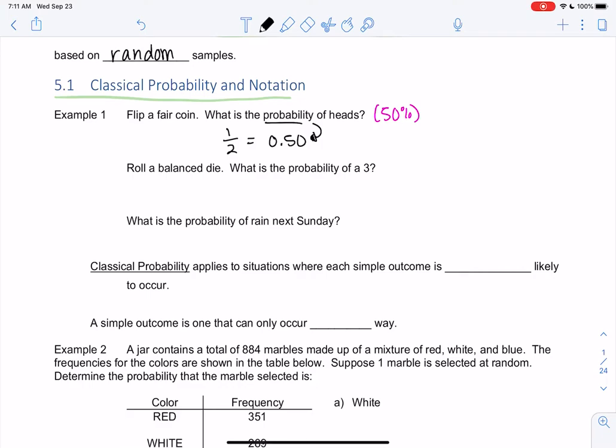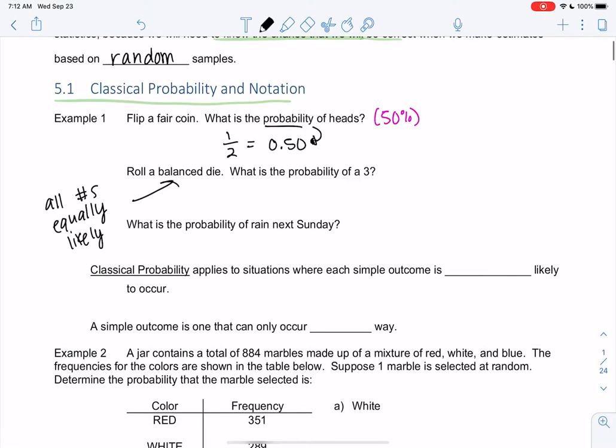If we roll a balanced die, so balanced just means all the numbers are equally likely. Someone could technically have a shady dice where 6 is heavier or something to make it fall more. What's the probability of a 3? There's one number that's a 3 out of 6, so 1 divided by 6 is 0.1667. Again, it's 16.67%, but we prefer a decimal form for probability.